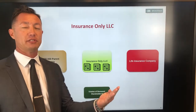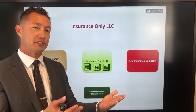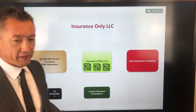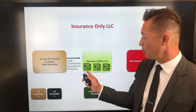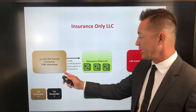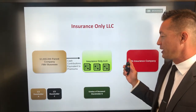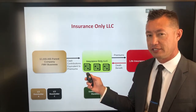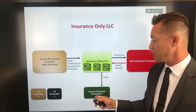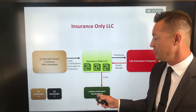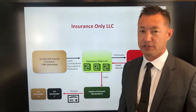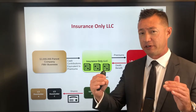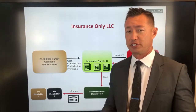There's a third option that gives you the benefit of ease of administration and the step-up in basis — the best of both worlds — and that's the insurance-only LLC. In this example, a parent company sets up an insurance-only LLC to hold just the life insurance to fund the arrangement. Cash contributions equal to the premiums are paid to the insurance company, which pays the death benefit to the insurance-only LLC upon a death. That cash is then used to purchase the shares of the deceased, and those shares are given to the living shareholders. You get one policy each, it's paid by the corporation, and it's transparent.